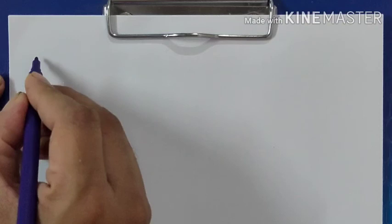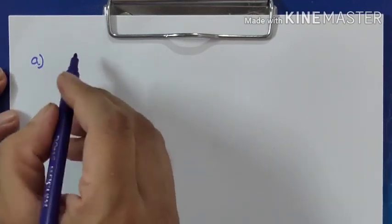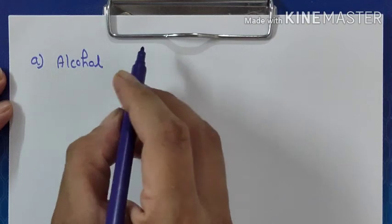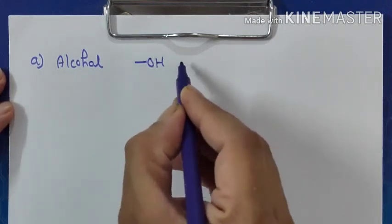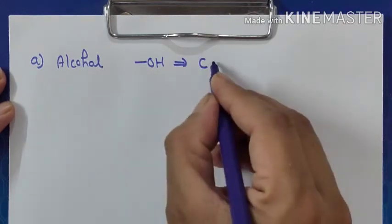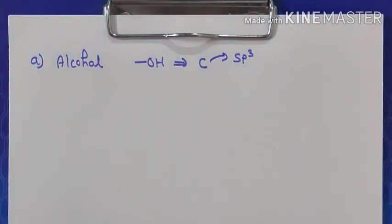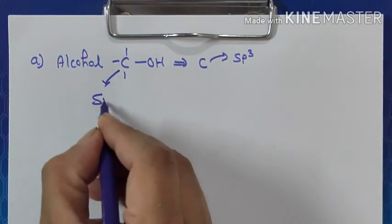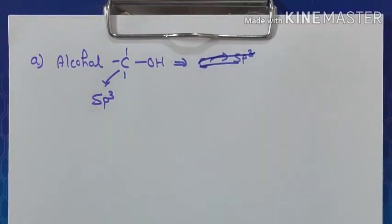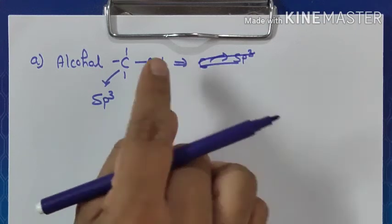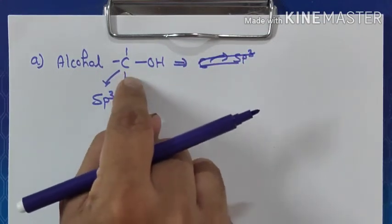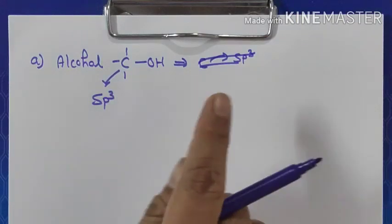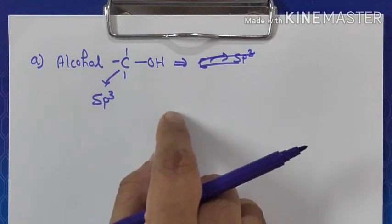The next classification is based on the carbon to which the OH group is attached. Alcohol is one in which the OH group is attached to a carbon that is sp3 hybridized. This can be further classified as primary, secondary, and tertiary.